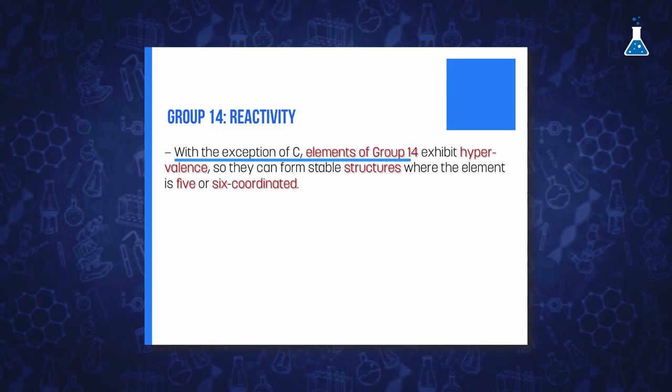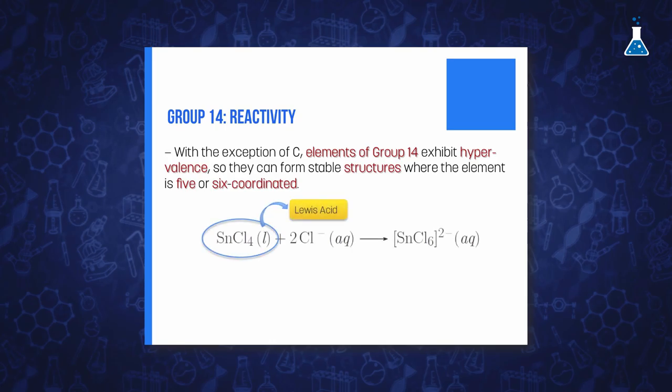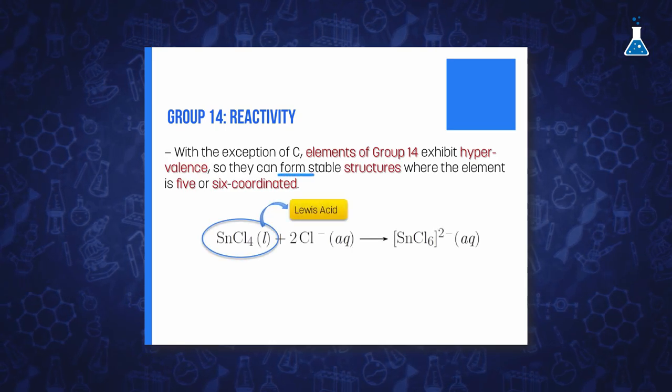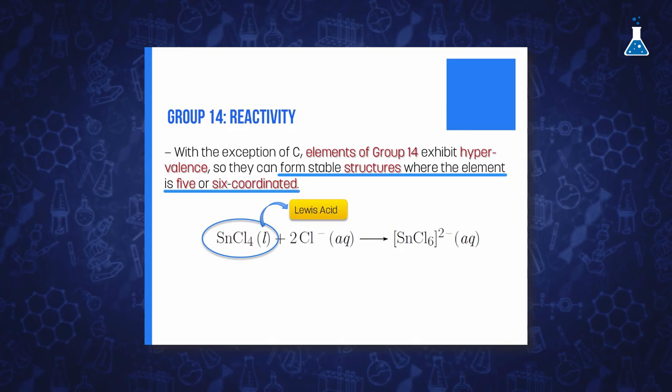Another remarkable aspect about the reactivity of the elements of group 14 is that, with the exception of carbon, they can exhibit hypervalence and therefore they can act as Lewis acids by forming stable structures where the element is 5 or 6 coordinated. A typical example is the reaction of tin 4 tetrahalides with halide ions to form octahedral complexes.